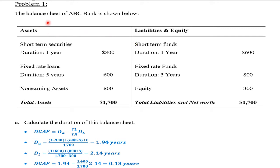The balance sheet of ABC Bank is shown below. We have the assets, the amount of each asset along with its duration, and the liabilities and equity. The amount and duration of liabilities and equity are equal to 300. Total assets and total liabilities and net worth are equal to $1,700.